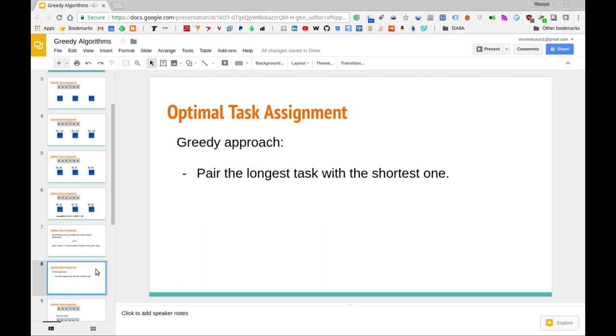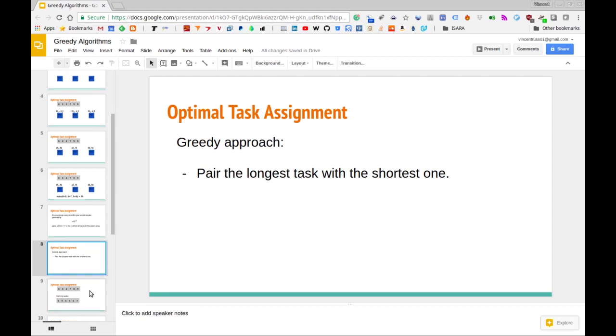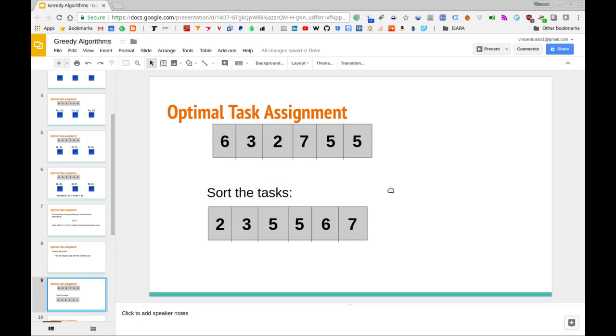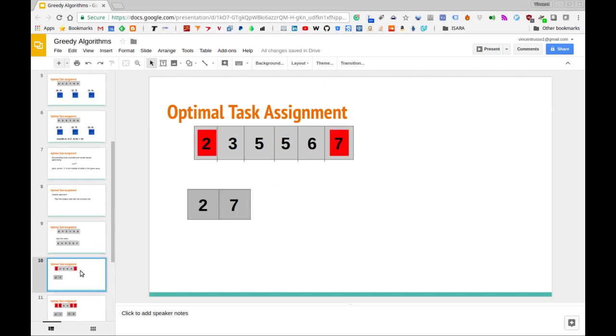So let's again take a look at the example that we were given at the beginning and see how we can actually achieve this. This is the array that we were given. In order for us to pick the longest and shortest and continually do that, we're going to sort the tasks in increasing order, just because that's going to make it a little bit easier. So we've gone ahead and sorted the tasks in increasing order.